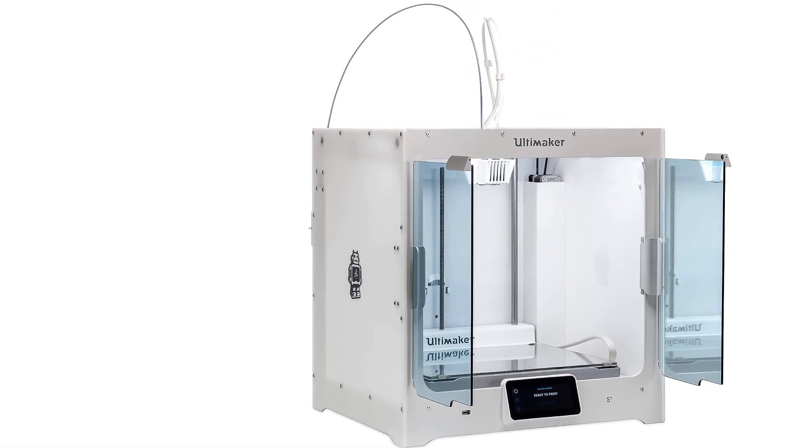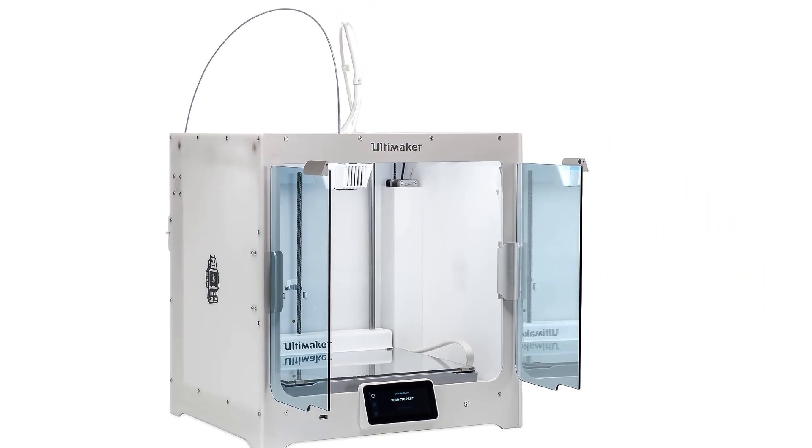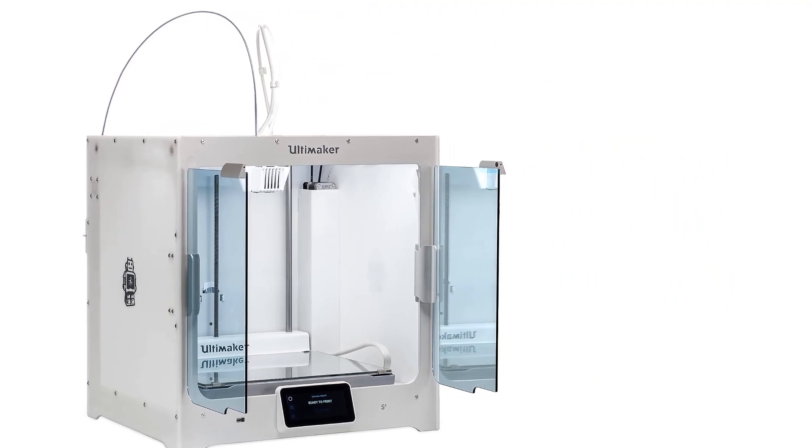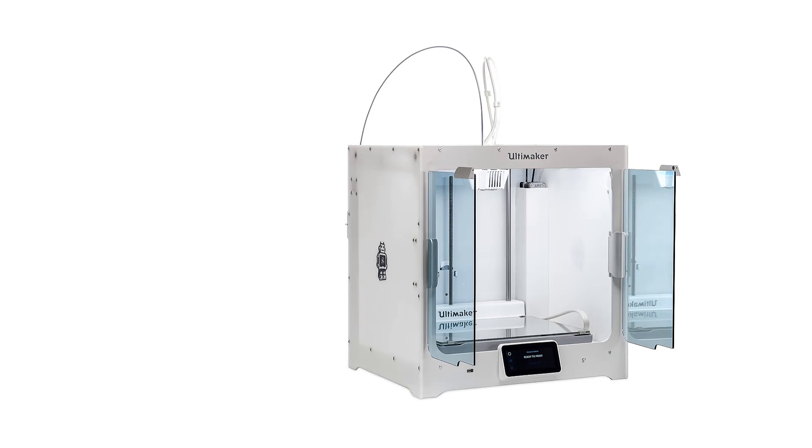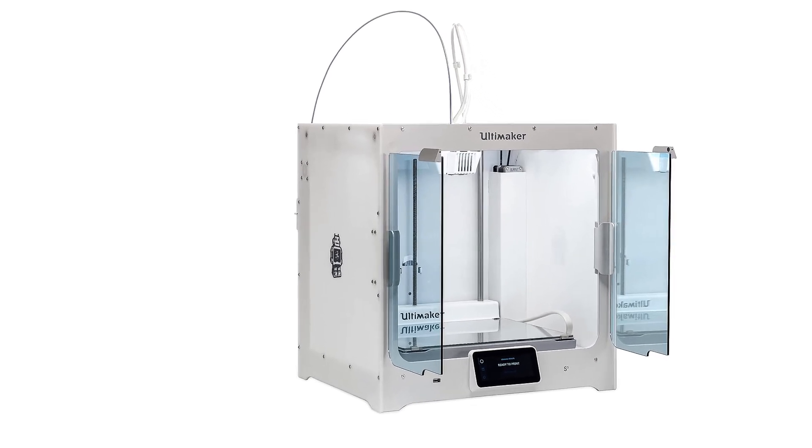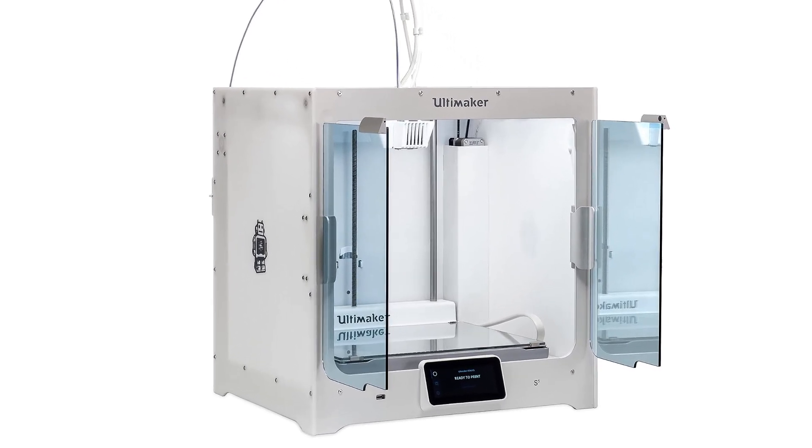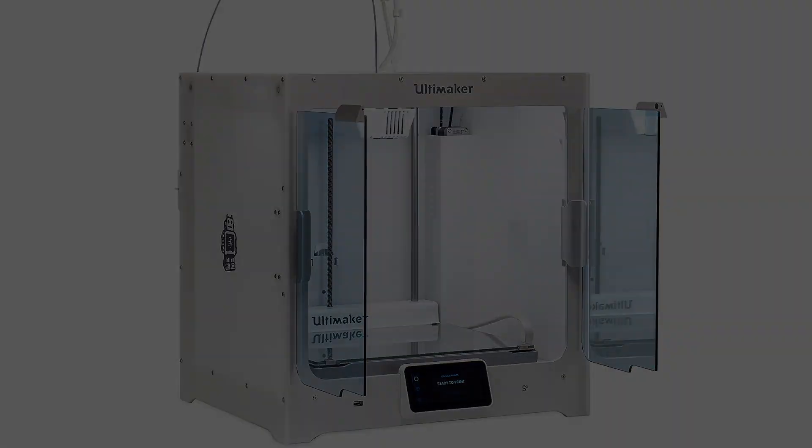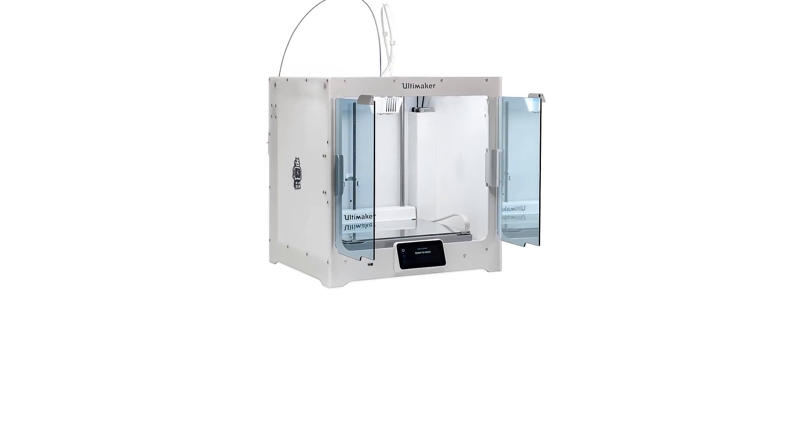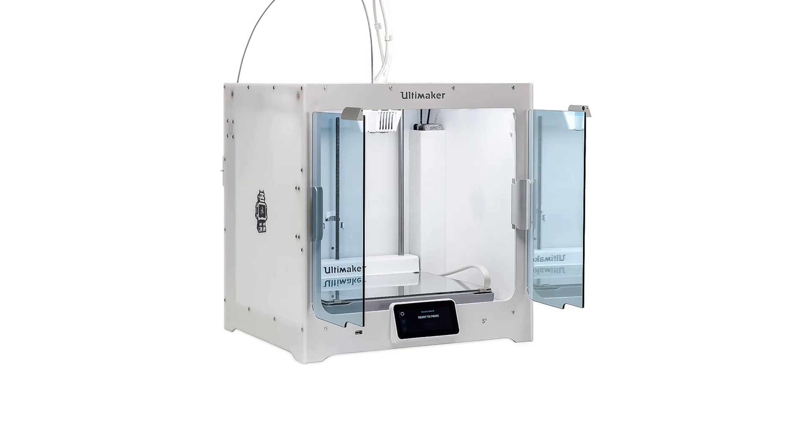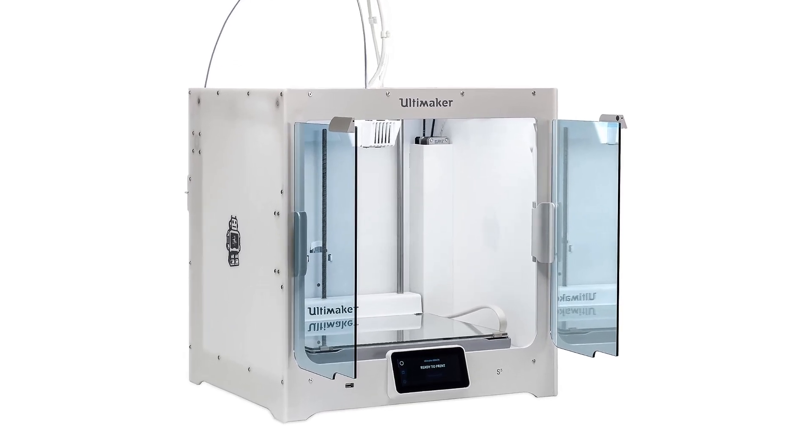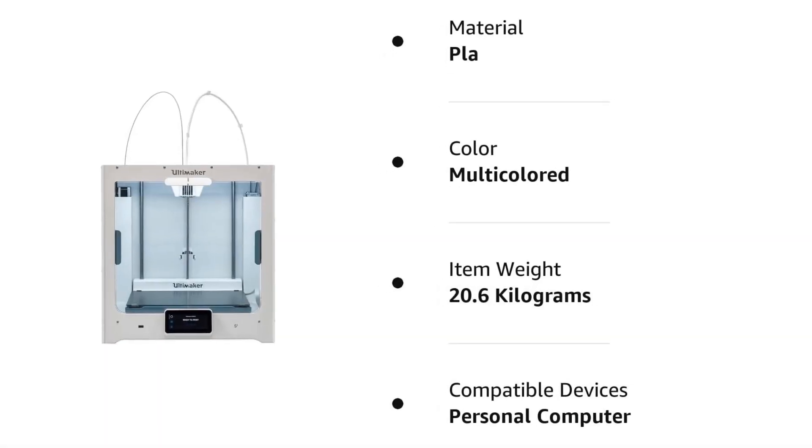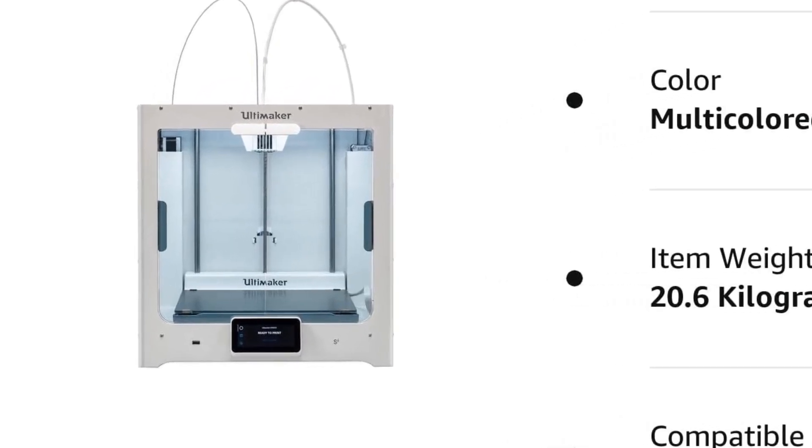The S5 is a good choice for product designers, engineers, architects, and others in need of a machine that can consistently churn out high-quality prototypes or models, and who have the money to spend on a printer to bring that ability in-house. Its dual extruders let you print in two colors or with multiple filament types. Its cubic print area is large for a closed-frame printer, and it churned out good to excellent quality prints in our testing.